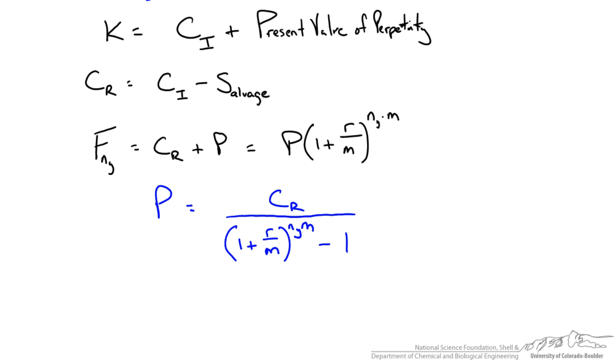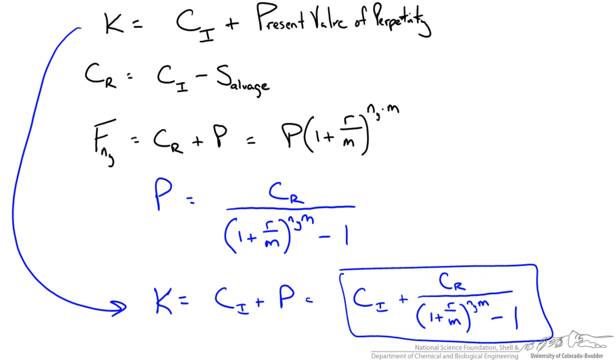As long as we know the nominal interest rate, the amount of times it is compounded per year, the amount of years we are looking at, and the replacement cost (which is the initial cost minus any salvage value), we can determine what our perpetuity is. We add this to the initial cost of the equipment and that gives us our capitalized cost.